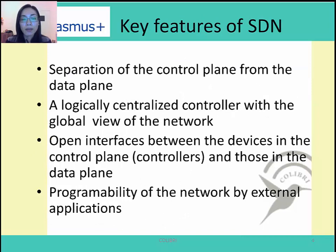Following are some key features of SDN. There are four key features that you should remember. The first is that the data plane has been decoupled from the control plane. The second is that a logically centralized controller exists and interfaces between the control plane and the data plane, so that these two planes can communicate with each other. And the network is programmable by external applications.